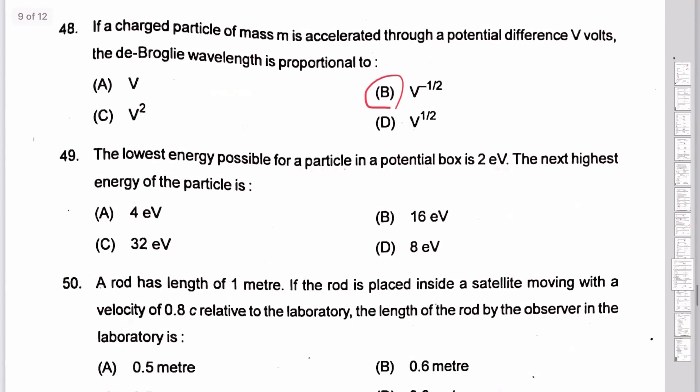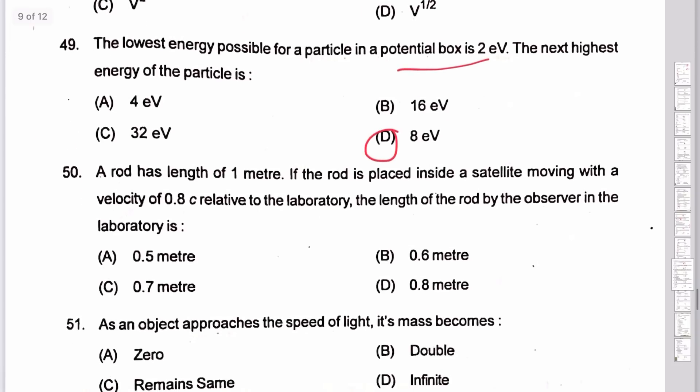Question 49: particle in a box with 2 electrons. Next highest energy level: 4 × 2 = 8 electron volts. So the next discrete energy level is 8 eV. That is how we look at the solution.